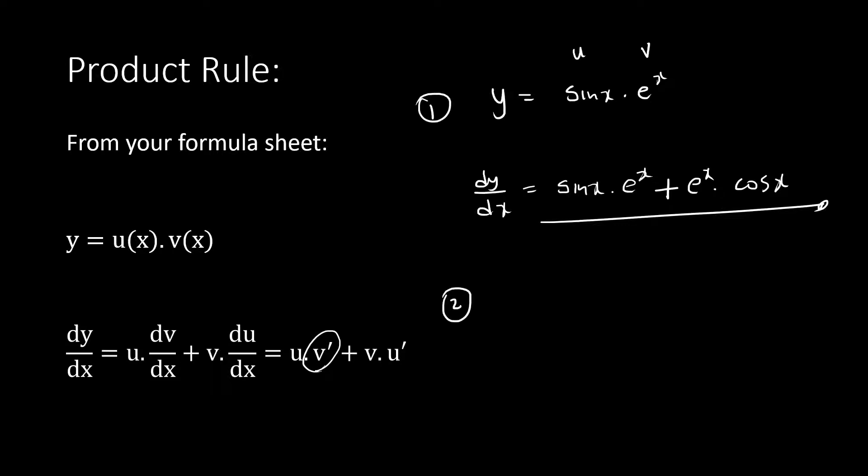If I have y equals tan x and ln x, the first - if I derive the first one will be u times the derivative of v which is one over x, plus v times the derivative of u which is sec squared x. That's product rule.